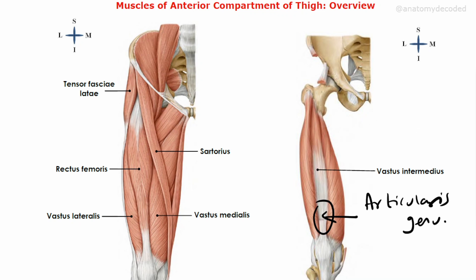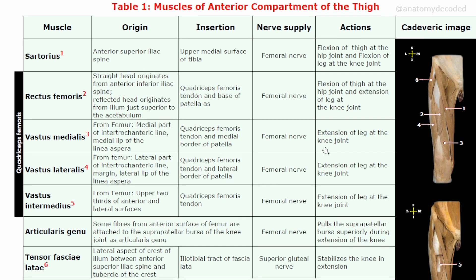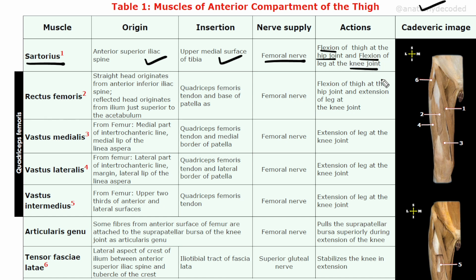So there are seven muscles in total. A table summarizes all seven muscles with their origin, insertion, nerve supply, and action, along with cadaveric images — important for practical exams where you identify muscles in the cadaver. Sartorius: origin is anterior superior iliac spine, insertion is the upper medial aspect of the tibia, nerve supply is the femoral nerve, and action is flexion at both the hip joint and the knee joint.